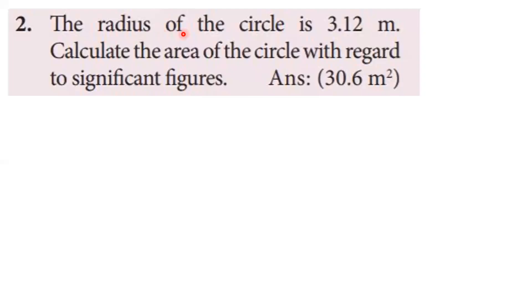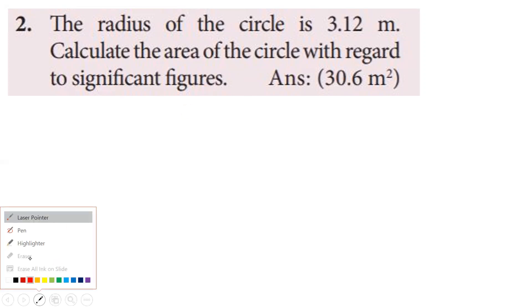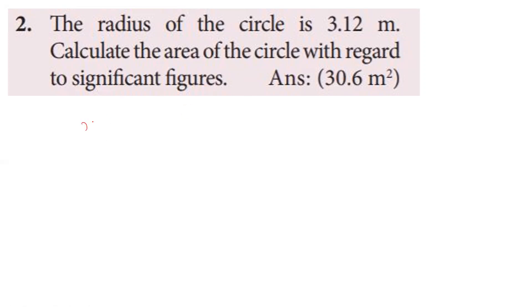Second question: the radius of the circle is 3.12 meters. Calculate the area of the circle with regard to significant figures. With respect to significant figures, we solve it. The radius of the circle is 3.12 meters. The area of the circle is pi r squared, using pi = 22/7 and r = 3.12 meters. The least significant value is 3.12 meters, which has 3 significant figures.